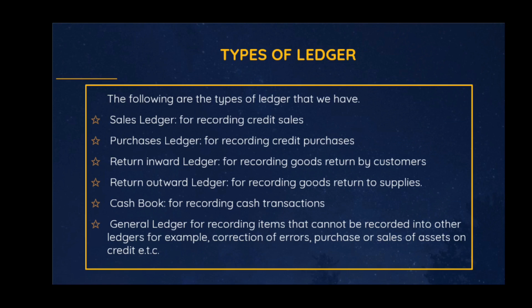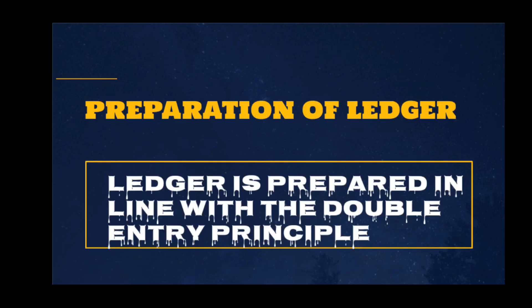The final type is the general ledger, which is used to record all transactions that cannot be recorded in the other ledgers. These include correction of errors and sales or purchase of assets on credit. The sales ledger and purchases ledger are meant for goods the business buys or sells on credit, but assets purchased on credit are recorded in the general ledger.